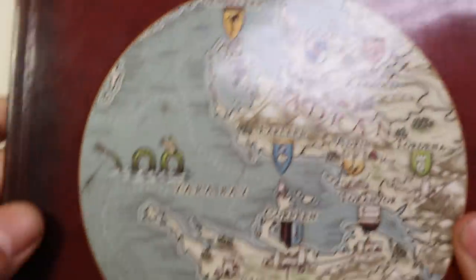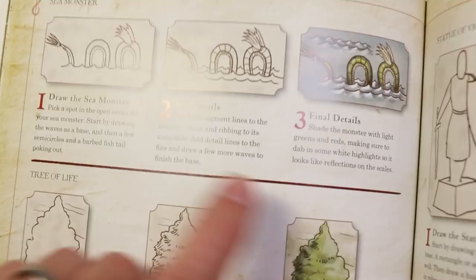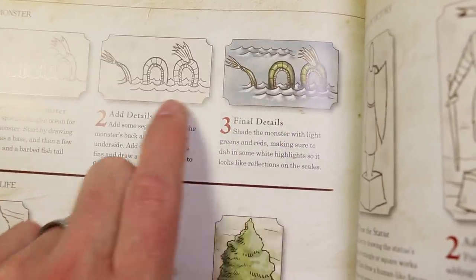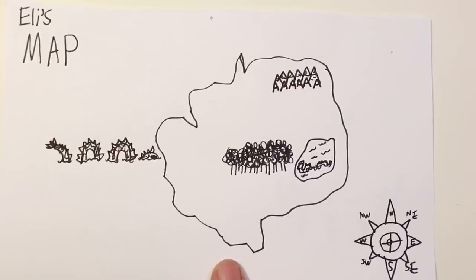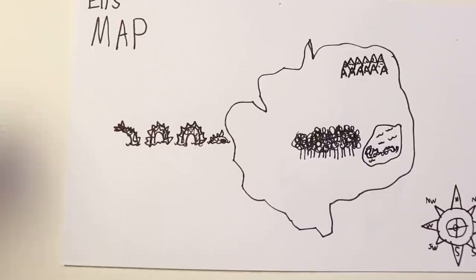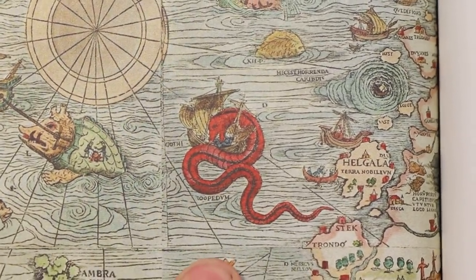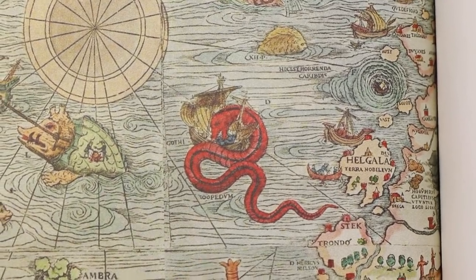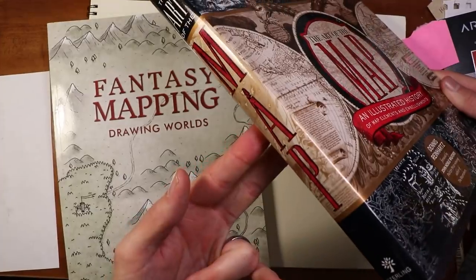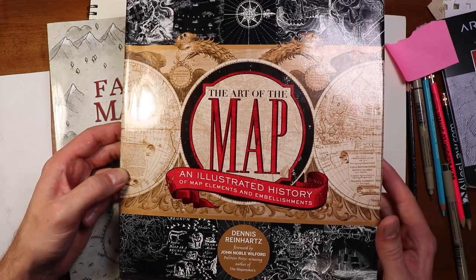One sea serpent that's a little bit similar is this one from the cover of Jared Blando's book, How to Draw Fantasy Art and RPG Maps. One of the things he does is he doesn't show the head, which is kind of cool because it leaves it to the imagination. My nine-year-old son actually made a map and did this same thing — pretty cool. One other sea serpent variation that's a lot of fun is the sea serpent wrapped around a ship. This example is from a Swedish map published in 1539, from the book The Art of the Map — an illustrated history of map elements and embellishments. I'll put a link in the video description.